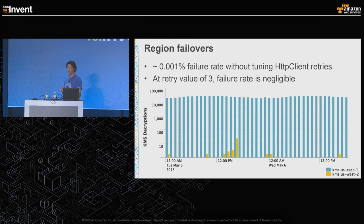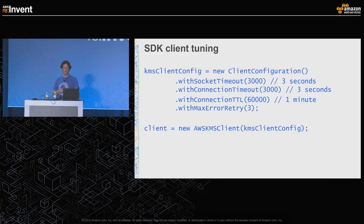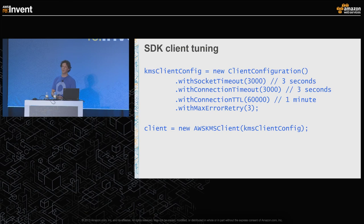When we rolled out KMS, we found we were failing over to the West region more than expected. When we dug in, it was typically due to standard socket and connection timeouts, and we noticed the SDK was not retrying more than once when calling out to KMS. If you're using the Java SDK, here are some settings that work well for us in production: socket timeout of 3 seconds, connection timeout of 3 seconds, and retrying three times. When we did that, we basically stopped seeing our service switch over to the other region unless there was a genuinely high error rate.